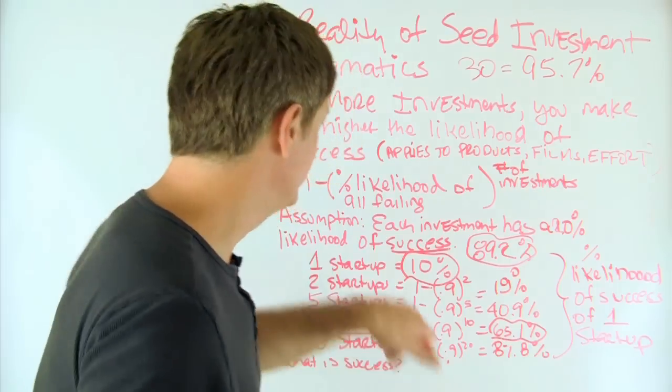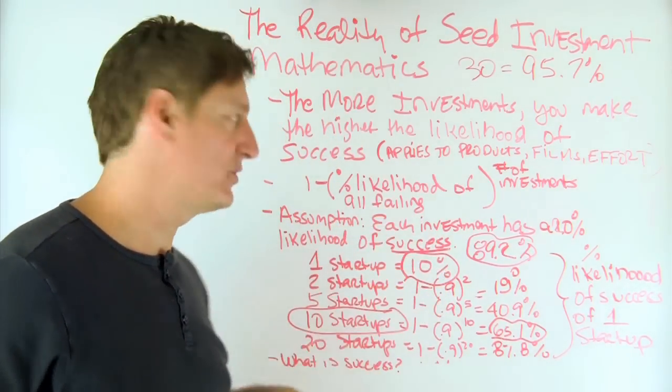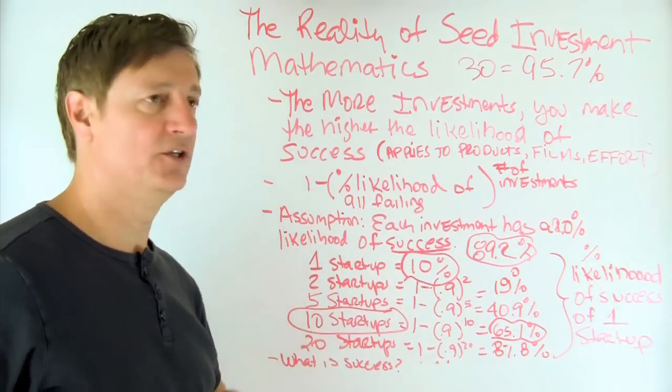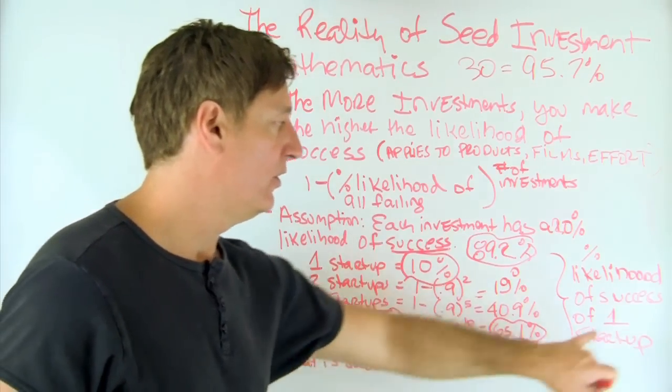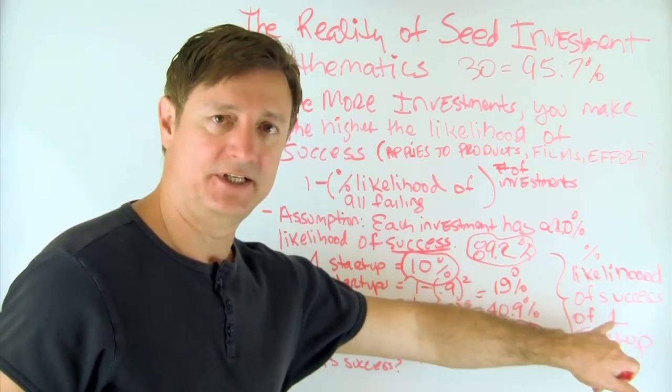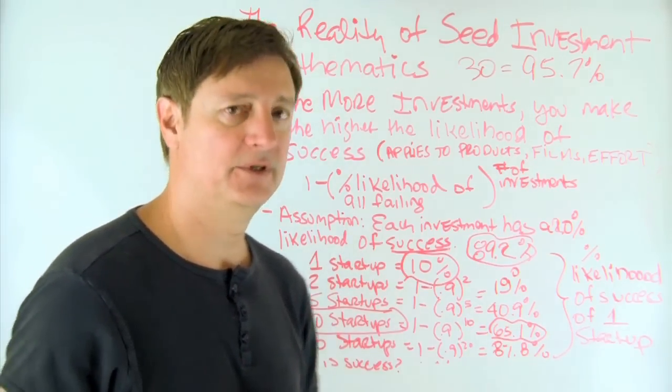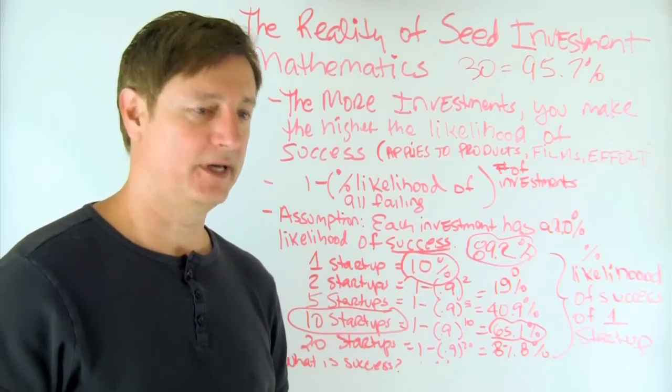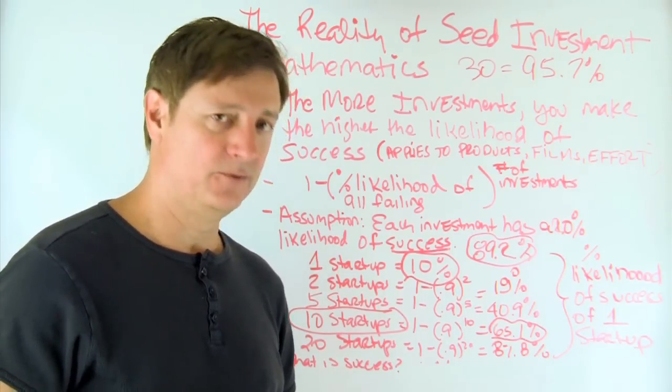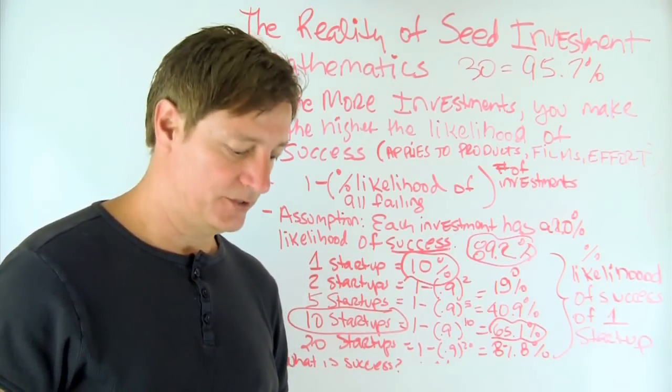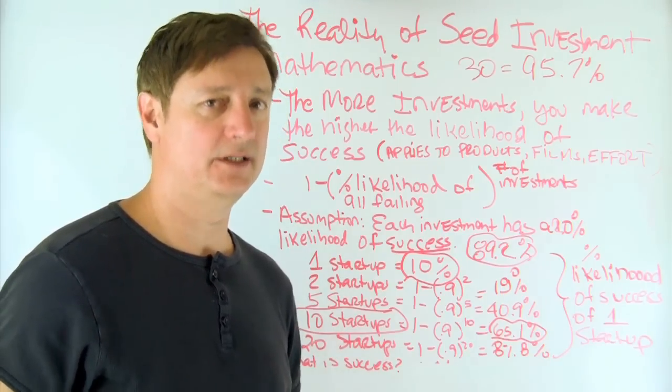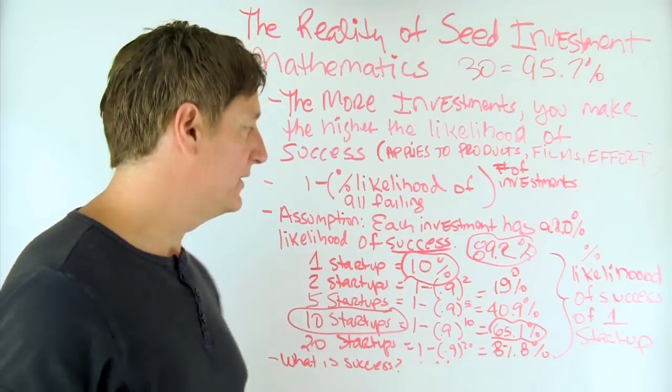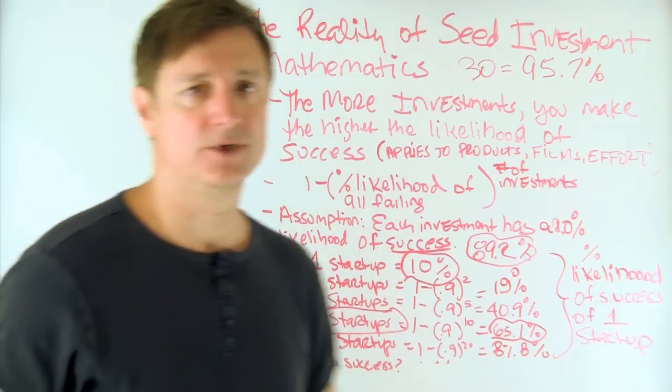So now your key question is, how do I change the assumption of percent likelihood of all failing or percent likelihood of one of them succeeding? So now you have to account for if you build a better management team, for one. If you really have done enough due diligence on the idea before you spend a lot of money doing it. But once again, the math will always work in your favor.